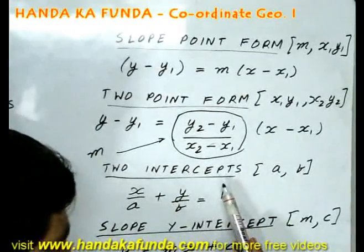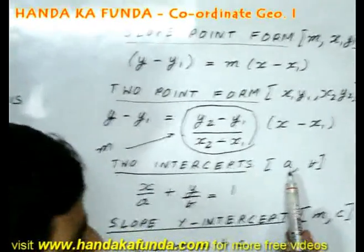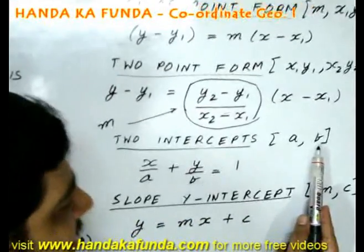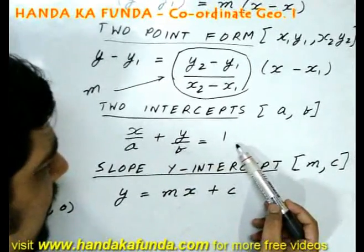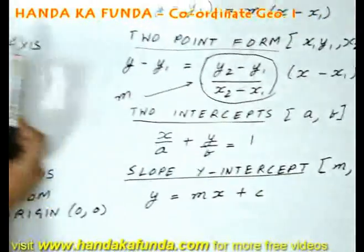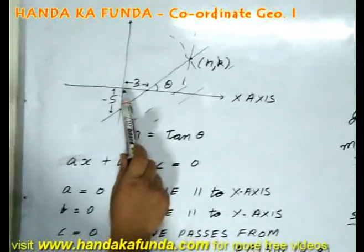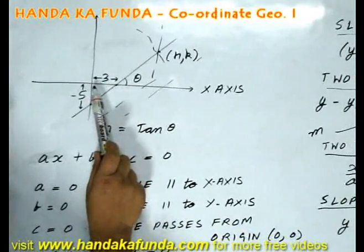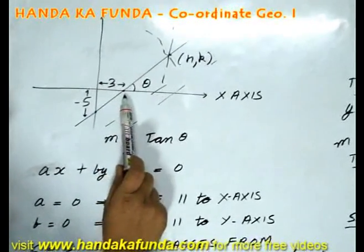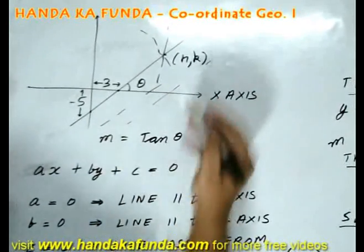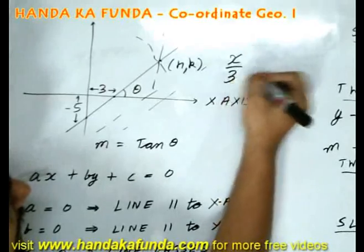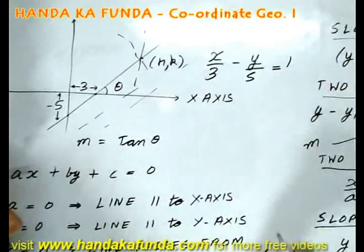If I am given the two intercepts, say the x-intercept is a and the y-intercept is b, then the equation of the line is given by x by a plus y by b equal to 1. So, if I get back to the case here where the x-intercept of the line is 3 and the y-intercept of the line is minus 5, the equation of the line would have been x by 3 minus y by 5 is equal to 1.